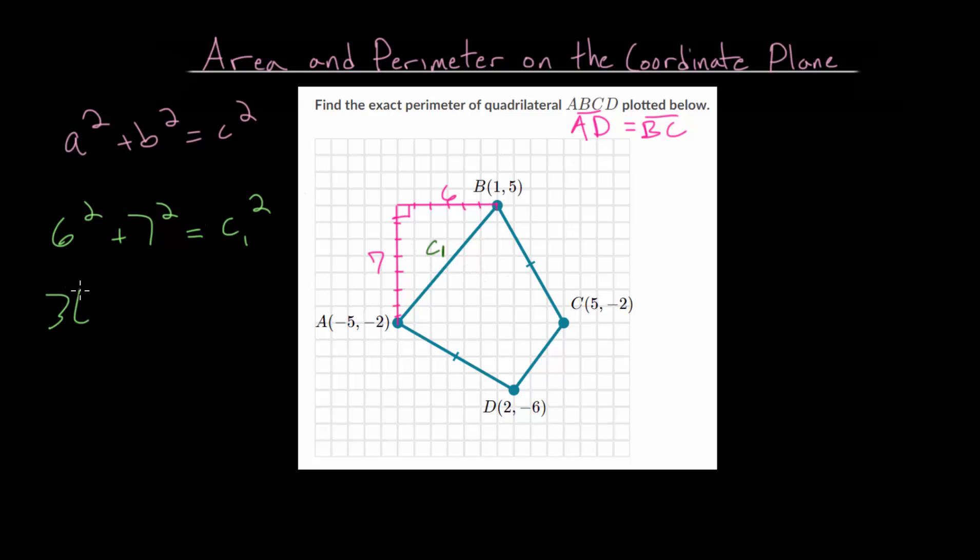And we can simplify this. This is 36 plus 49 is c1 squared. And if we add 30 to this, that brings us to 79. Adding 6 more brings us to 85. And to find c sub 1, we will square root each side.